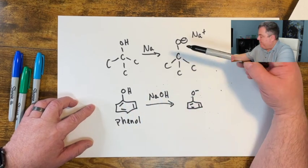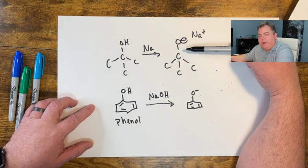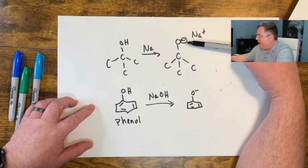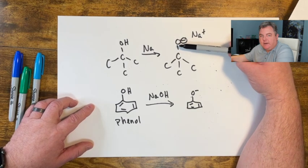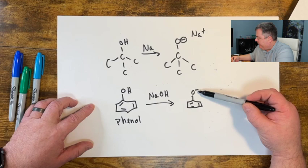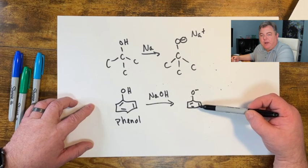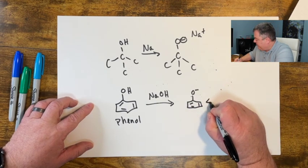Why is that so acidic? Well, when we make a regular alkoxide, the O minus, the negative charge has nowhere else to go. It's 100% stuck on that oxygen. But this negative oxygen can move around into this ring through resonance forms.